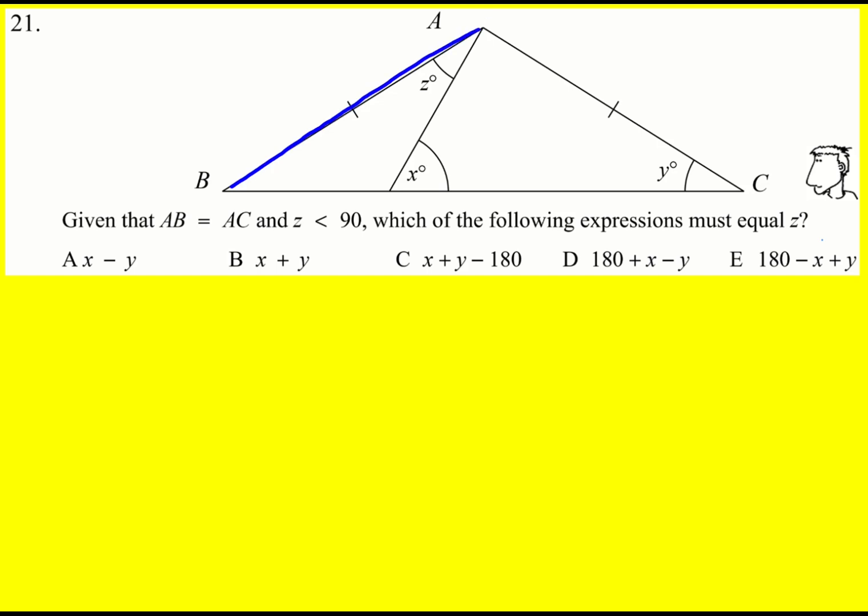We're told that AB is equal to AC, and that means that the base angles of this isosceles triangle are equal. That must equal Y.